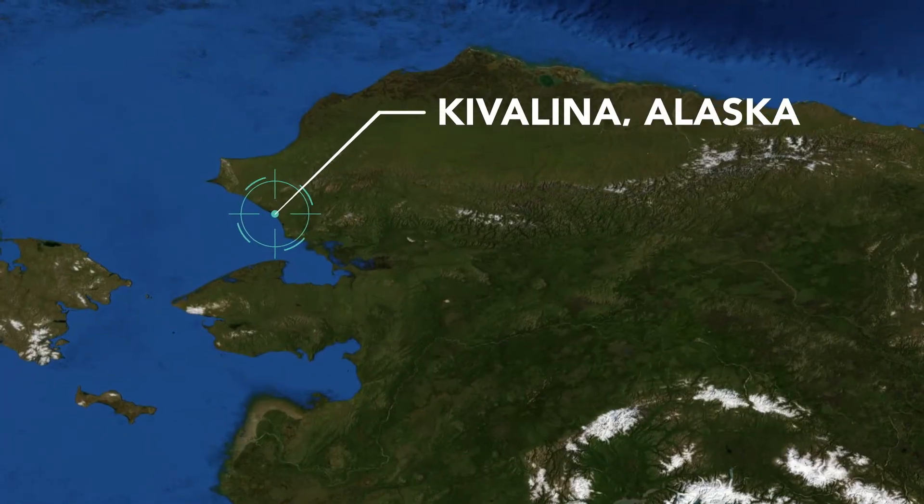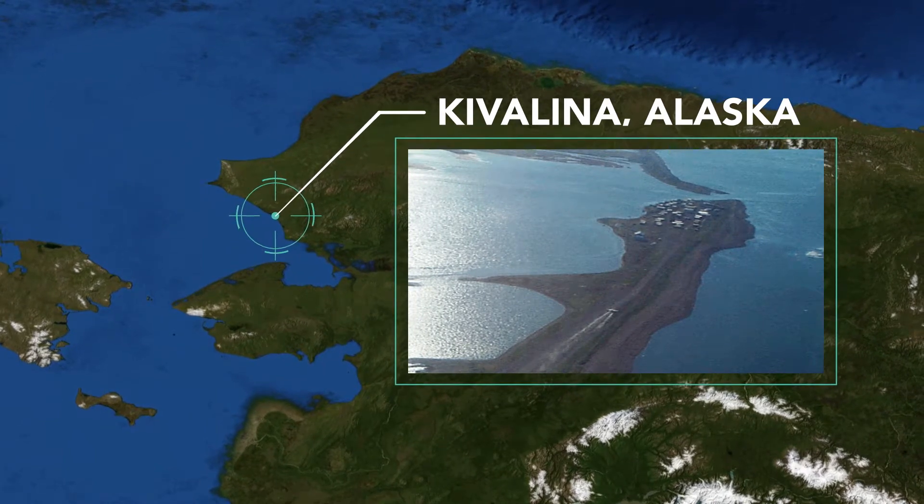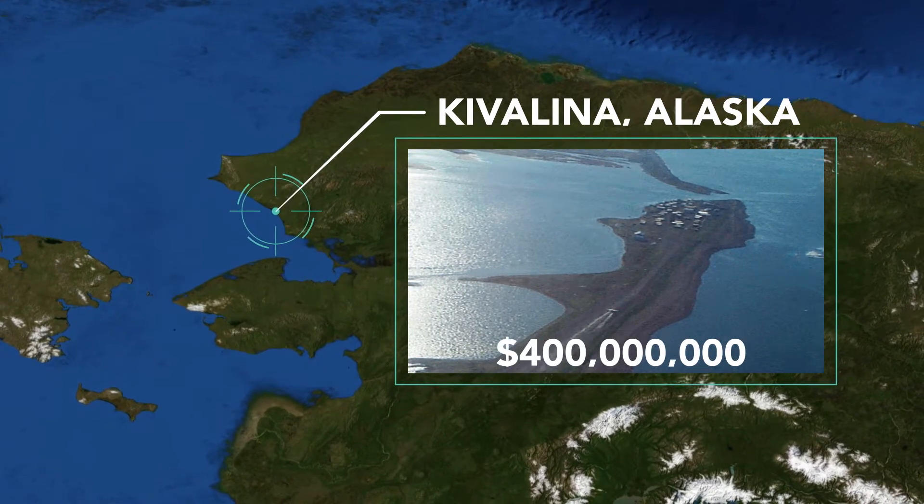Thawing permafrost can also contribute to landslides and erosion, particularly on the coast. In some places, this erosion due to diminished permafrost can be so severe that entire communities must be relocated. This is what happened to the town of Kivalina, Alaska, whose relocation costs are averaged at $400 million.